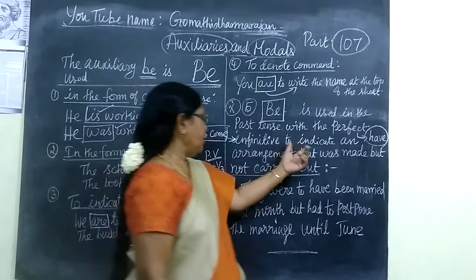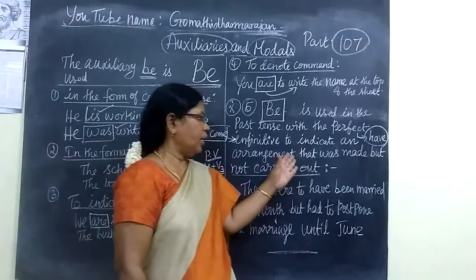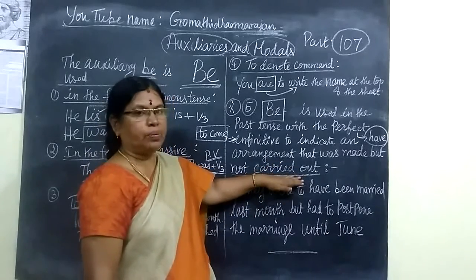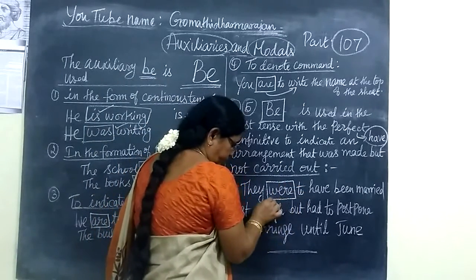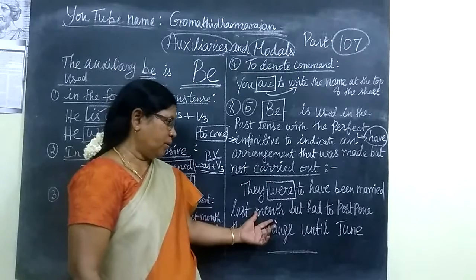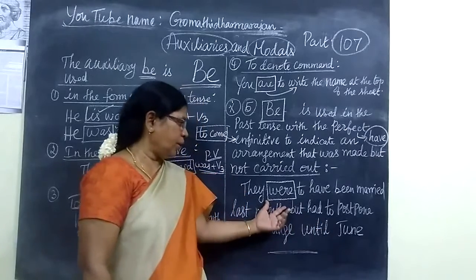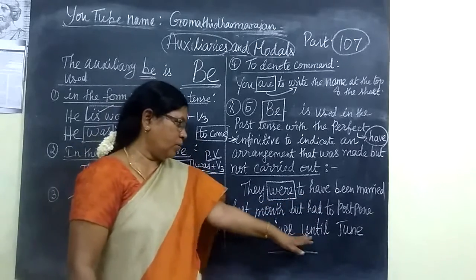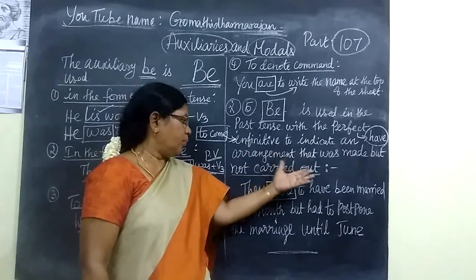The perfect infinitive is used to indicate an arrangement that was made but not carried out. In the sentence: 'They were to have been married last month, but they had to postpone their marriage until June.' Last month they had a plan to get married, but they had to postpone their marriage until June — a plan made but not carried out.